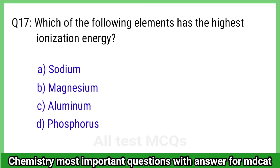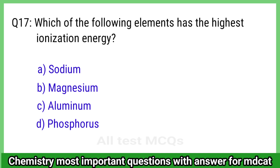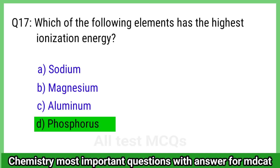Question 17: Which of the following elements has the highest ionization energy? The right answer is option D, phosphorus.